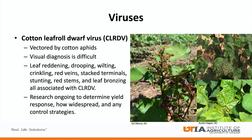The cotton leaf roll dwarf virus, or CLRDV, is a viral disease recently observed in mid-south cotton. The disease is vectored by cotton aphids and has many different symptoms, making visual diagnosis difficult. Leaf reddening, drooping, wilting, crinkling, red veins, stacked terminals, stunting, red stems, and leaf bronzing are all symptoms associated with CLRDV. Research has also shown the presence of the disease in cotton plants that do not exhibit any symptoms, making it difficult to determine how widespread the disease actually is. Current research is ongoing to determine the impact on yield, how widespread the disease is, and if there are any control strategies to help mitigate infection and decrease spread of the virus.